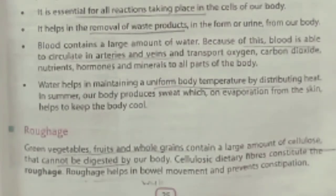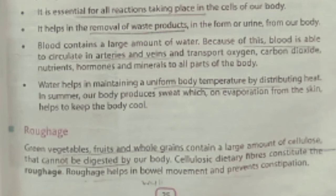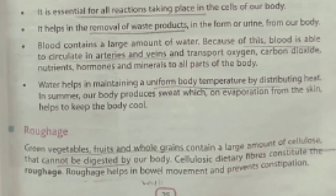The next topic is roughage. Green vegetables, fruits, and whole grains all contain cellulose. There are no bacteria present in our body that help to digest cellulose. Cellulose dietary fibers, also called roughage, help in bowel movement and prevent constipation. Bowel movement means the removal of waste from your body.